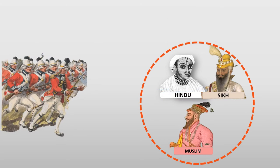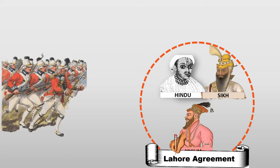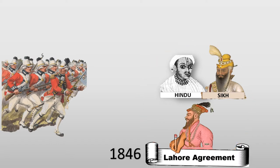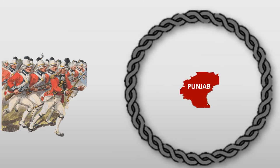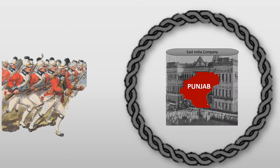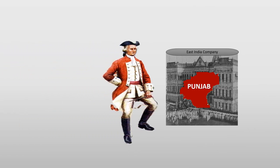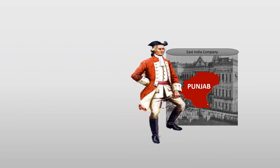Therefore, the defeated rulers signed a very painful Lahore Agreement in 1846. As a result, Punjab came under the control of the British East India Company and finally accepted a British person as the ruler of Punjab.